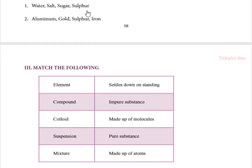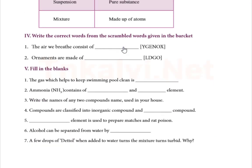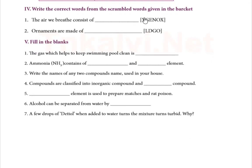Next, pick out the odd one. Water, salt, sugar, sulfur. Three are compounds, so the answer is sulfur - that is one element. Second one: aluminum, gold, sulfur, iron. Aluminum, gold, iron are metals. Sulfur is a non-metal, so sulfur is the answer. Third one, match the following: Element - made up of atoms. Compound - pure substance. Colloid - made up of molecules. Suspension - settles down on standing. Mixture - impure substance.